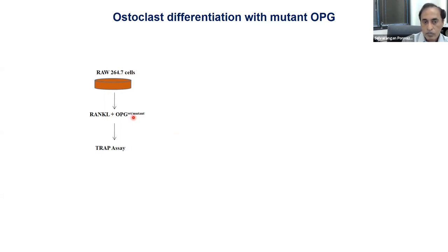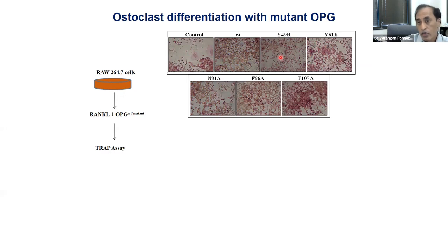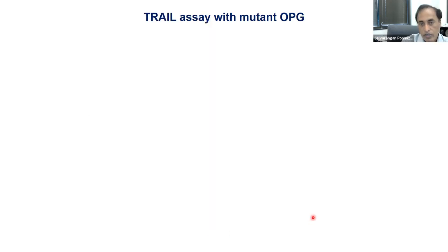To validate that OPG mutants retain their ability to inhibit RANKL-induced osteoclast function, we performed an osteoclast assay using RAW cells (pre-osteoclast cells). When stimulated with RANKL, RAW cells undergo differentiation into multinucleated osteoclasts. Wild-type OPG completely prevents this. When we tested our mutants, almost all showed preserved osteoclast function inhibition comparable to wild-type — a critical baseline confirmation.